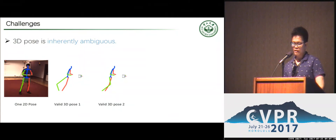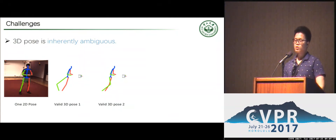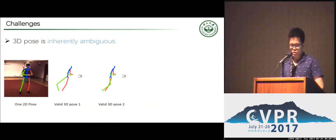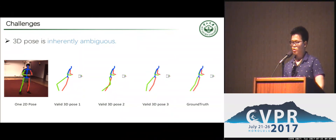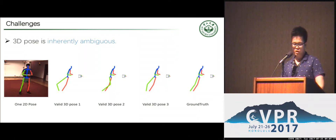For example, given a 2D image on the left, there are several various 3D pose interpretations which result in the same 2D representation. Some of them are shown on the right side, together with the ground truth. The 3D poses here are plotted in a side view.